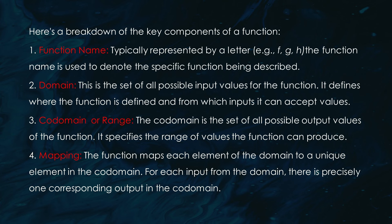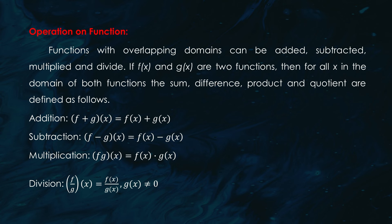So what makes up a function? There are four key parts: one, the function name — usually a letter like f or g; two, the domain — the set of all possible inputs; three, the range or codomain — the possible outputs; and four, the mapping — which shows how each input is connected to a single output.